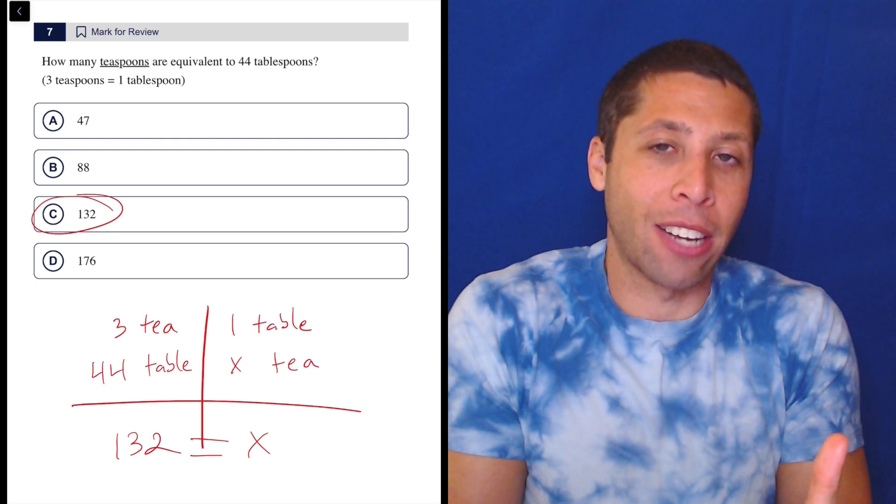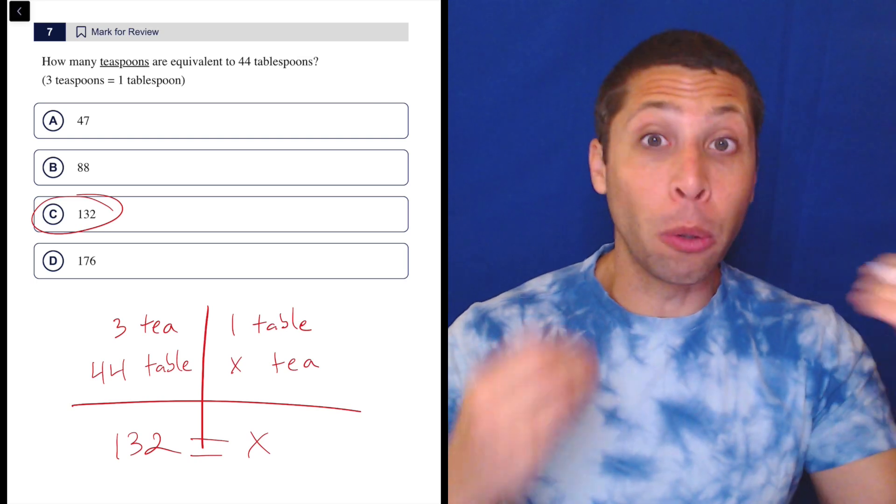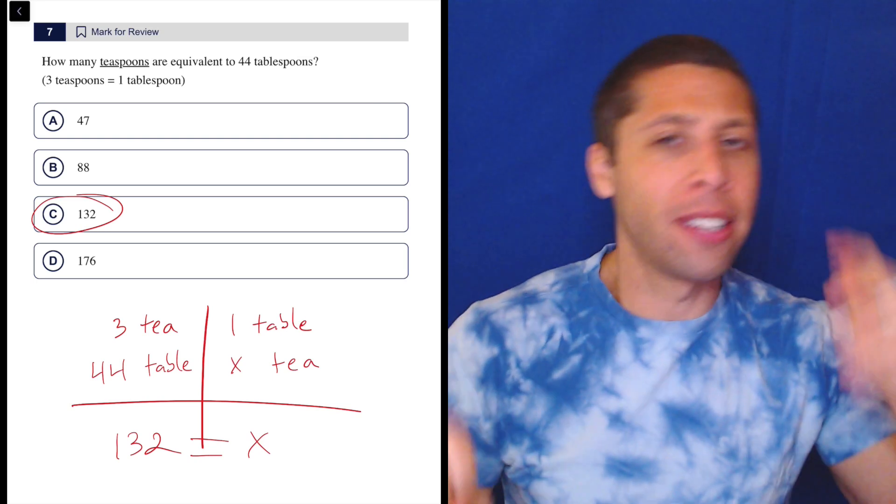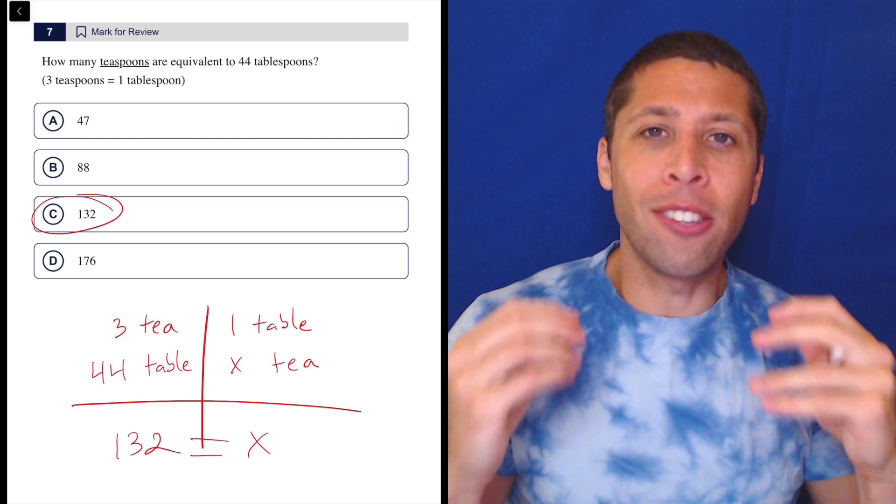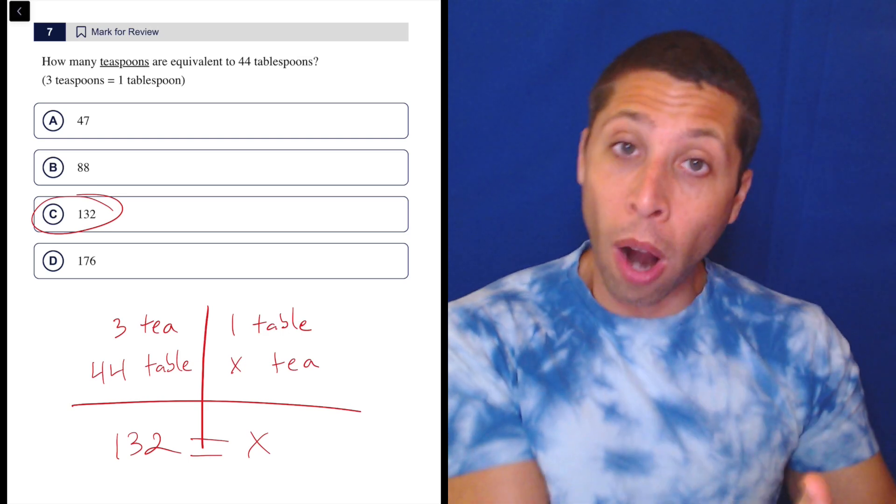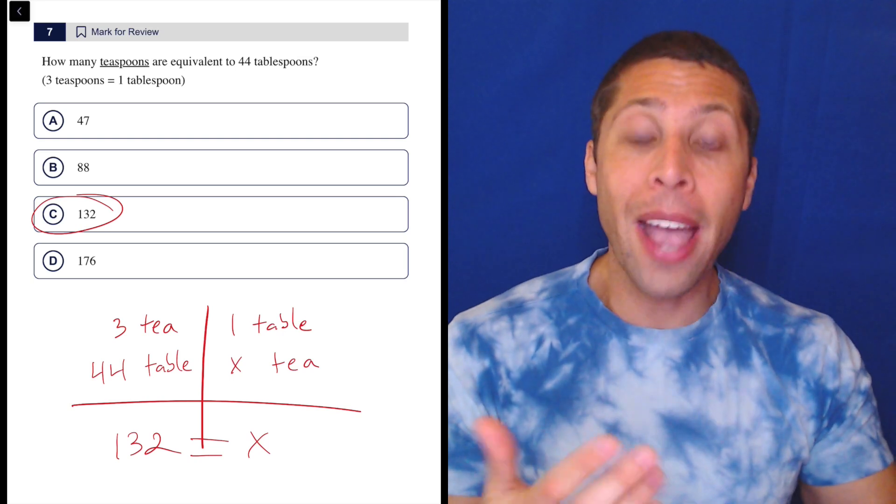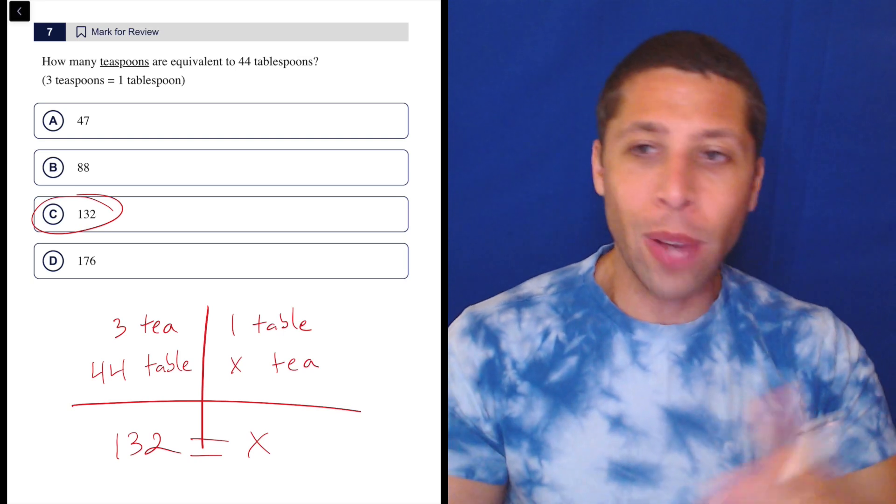The problem with people who are always trying to optimize everything—should I write it down, should I not, what's faster—is you end up taking more time in the deliberation. And the times that you're wrong, when you should have written things down, you go down a path where you waste time anyway trying to do it in your head.